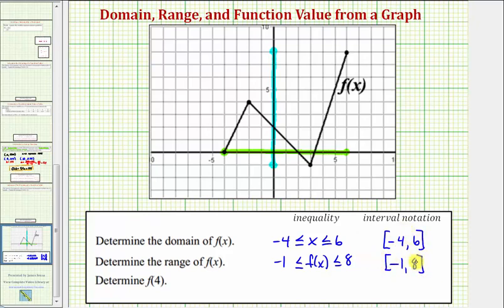If an endpoint was not included, we would use a rounded parenthesis. I hope you found this part helpful. Next we'll take a look at how to determine the function value f of four from the graph.